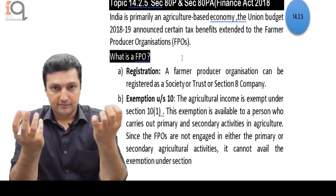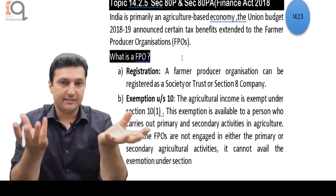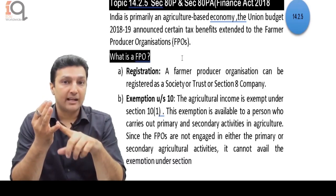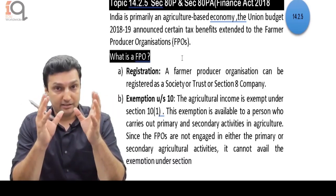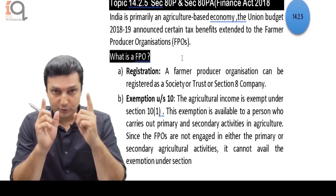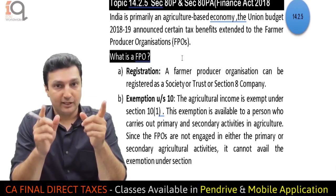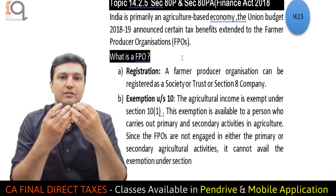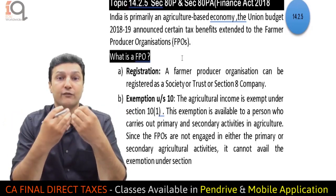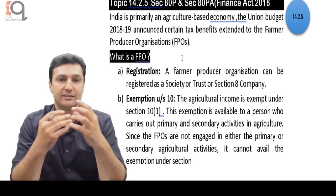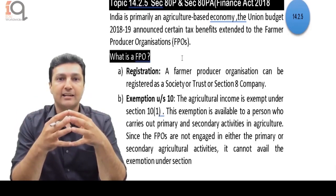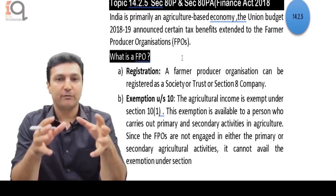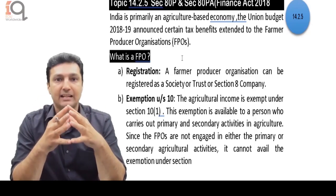India is an agricultural based country. We know that income from agriculture is exempt under section 10. Agricultural income is defined under section 2(1A) — it was rent from land used for agriculture, rent from buildings or farm houses used for agriculture, and sale of agricultural produce where basic operations and subsequent operations had to be performed. Those activities are agricultural activities.